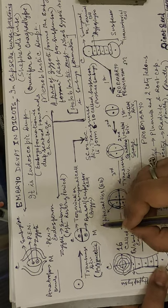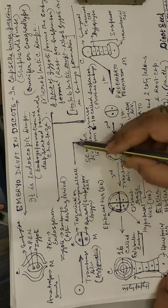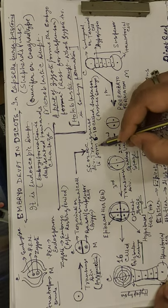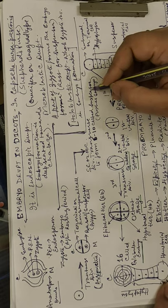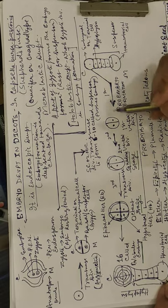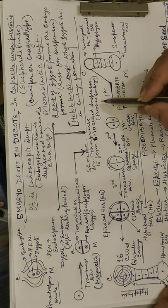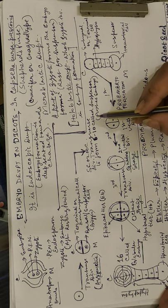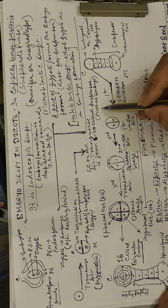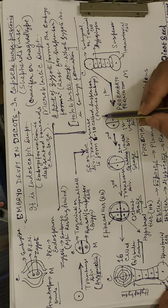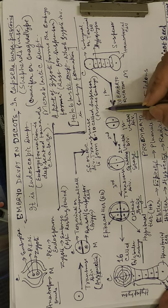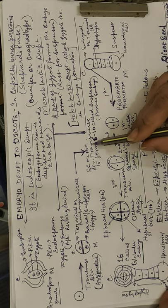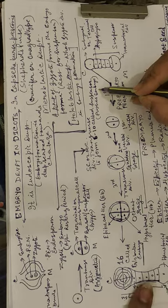The suspensor cell, also called the basal cell, divides transversely to form a 6 to 10 celled suspensor. The suspensor is an essential part of seed plant embryos — its function is to push the embryo towards the chalaza so it can obtain nourishment from the endosperm. This is present in both gymnosperms and angiosperms.